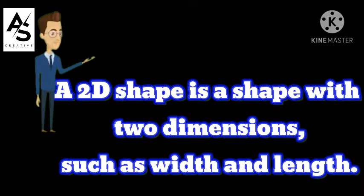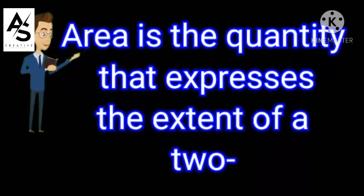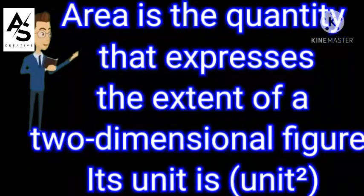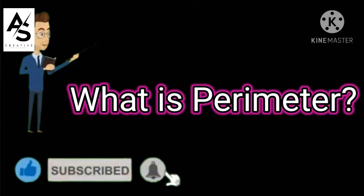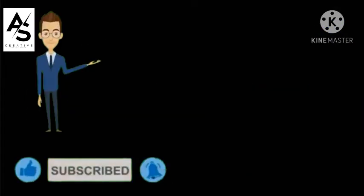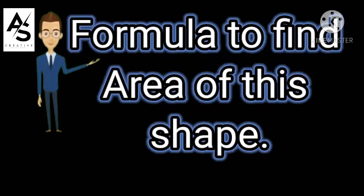What is area? Area is the quantity that expresses the extent of a two-dimensional figure. Its unit is unit square. What is perimeter? The fencing or boundary of any shape is called perimeter. Its unit is the same.